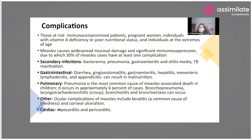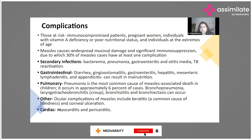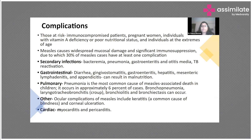Complications are important when we talk about measles, because measles results in mucosal damage — it affects the respiratory mucosa and the eyes. As a result, there can be widespread mucosal damage and significant immunosuppression, which is why complications in measles are very common. At least 30 percent of patients who get measles will have at least one complication.